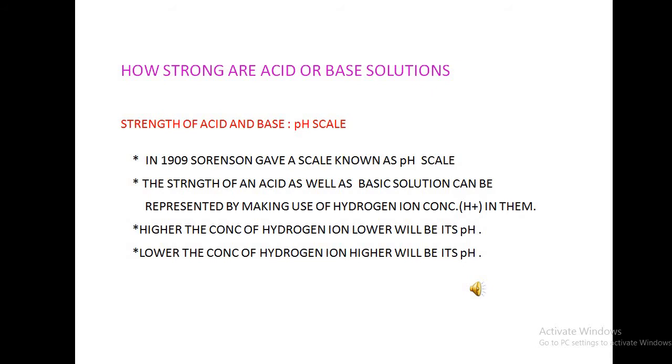We can do this by making use of a universal indicator, which is a mixture of several indicators. The universal indicator shows different colors at different concentrations of hydrogen ions in a solution. A scale for measuring hydrogen ion concentration in a solution called pH scale has been developed in 1909 by Sorenson.